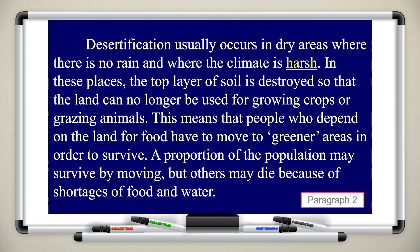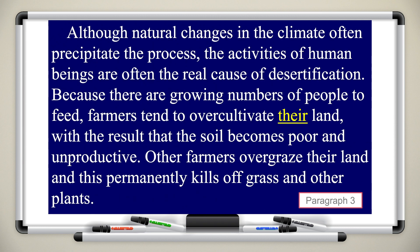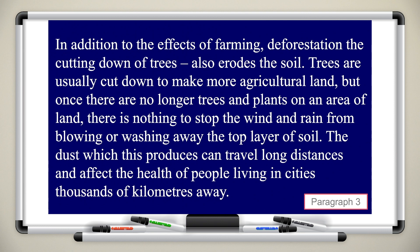A proportion of the population may survive by moving, but others may die because of shortages of food and water. Although natural changes in the climate often precipitate the process, the activities of human beings are often the real cause of desertification. Because there are growing numbers of people to feed, farmers tend to over-cultivate their land, with the result that the soil becomes poor and unproductive. Other farmers over-graze their land, and this permanently kills off grass and other plants. In addition to the effects of farming, deforestation — the cutting down of trees — also erodes the soil.